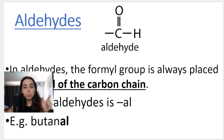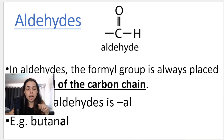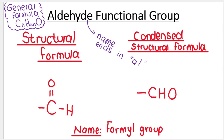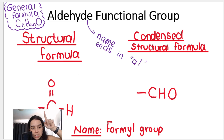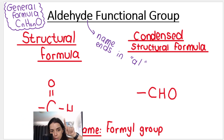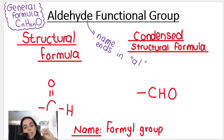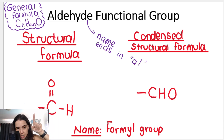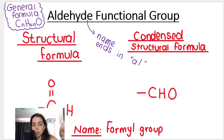An example of a name could be butanal — ends in AL, that's how we know we're talking about an aldehyde, and this aldehyde has four carbons. When drawing the structural formula of the functional group, you need to see the carbon, the hydrogen, and the double bond oxygen. The hydrogen is there because this comes at the end of the chain, and that little bond line must be there. Do not draw an extra hydrogen on the other side — draw it exactly as is.